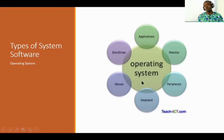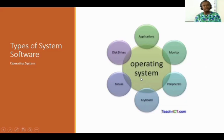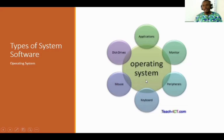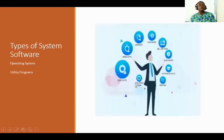For example, you cannot just install Microsoft Word on a system and expect it to run. You need to first install an operating system, and then you install the application, which is Microsoft Word. The second flavor of system software is utility programs — programs that help the system store, edit files, and organize or manage the system on its own.